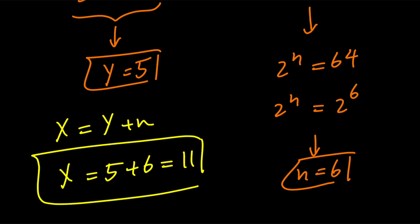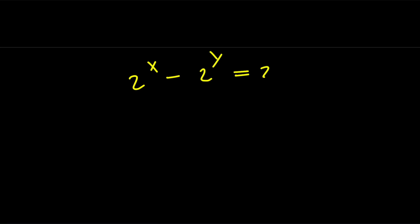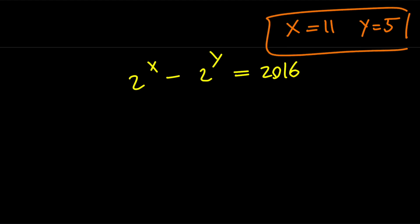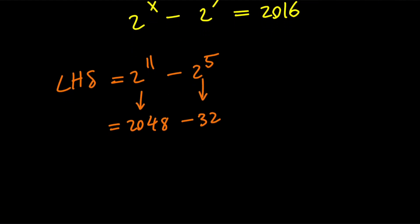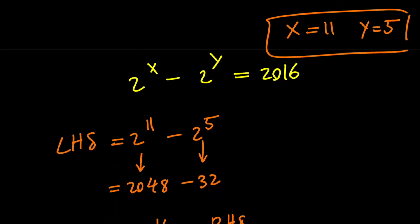For the final check, let's verify these values. Based on the original equation, 2 to the power of x minus 2 to the power of y should equal 2016. We found x equals 11 and y equals 5. Therefore, the left-hand side is 2 to the power of 11 minus 2 to the power of 5, which is 2048 minus 32, which equals 2016 — the right-hand side of our equation. So x equals 11 and y equals 5 is a valid solution.